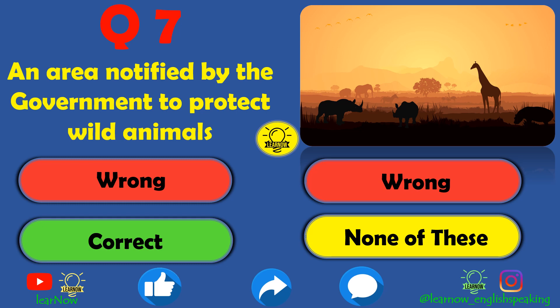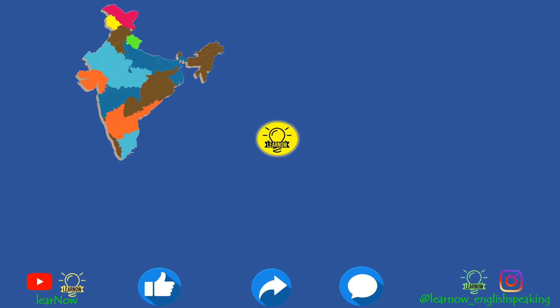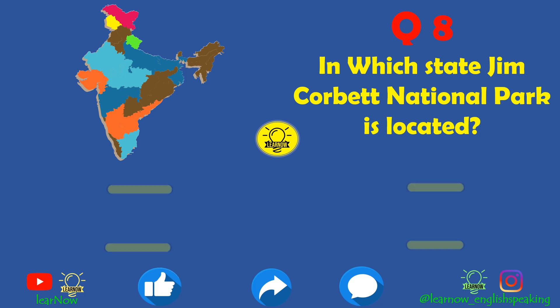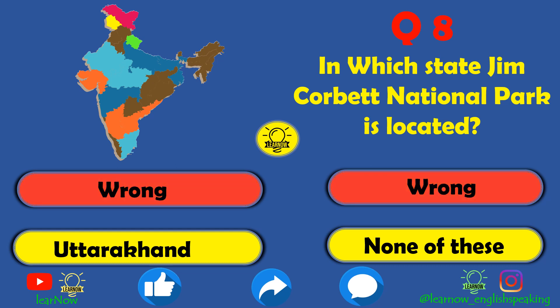Next question: in which state is Jim Corbett National Park located? Jammu and Kashmir is wrong, Ladakh is also wrong. Uttarakhand is the correct answer — Jim Corbett National Park is located in Uttarakhand. You should also know the locations of all the different national parks in India and which state they belong to.